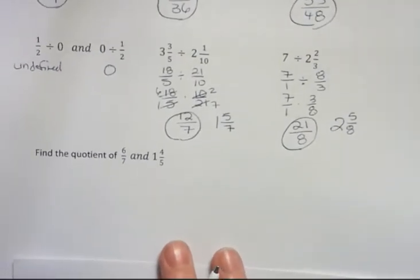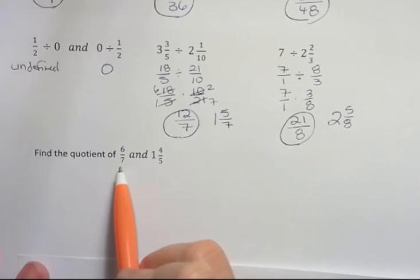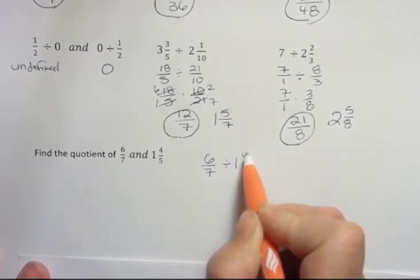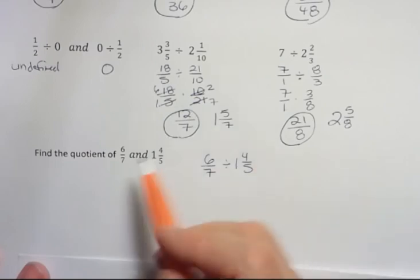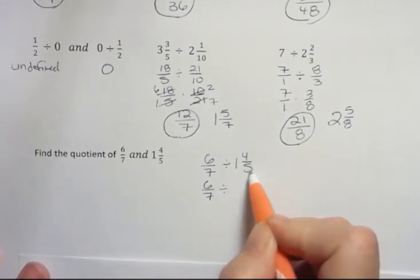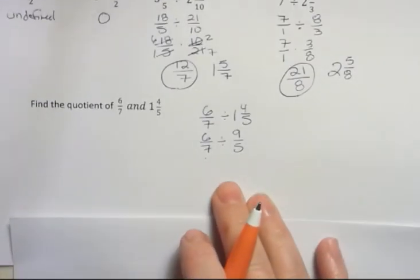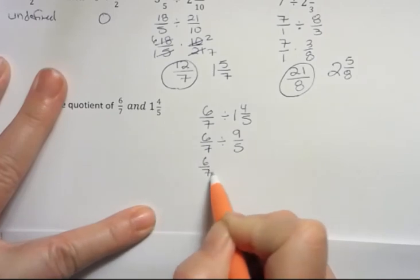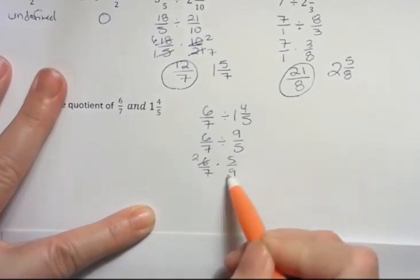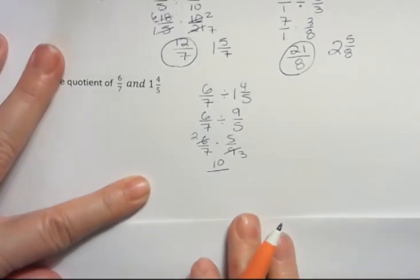Last problem, it could ask you to find the quotient of something. A quotient means to divide. And when you say quotient, whatever you say first has to come first. So it has to be this way: 6 sevenths divided by 1 and 4 fifths. We don't always put the greatest number first. We have to put it in the order that they were stated. 6 sevenths doesn't change. 1 times 5 is 5 plus 4 is 9 fifths. Now I can divide that. I'm going to take the dividend and leave it the same. That is 6 sevenths times 5 over 9. I can simplify here because 3 goes into 6 twice and into 9 three times. And 2 times 5 would be 10, and 7 times 3 would be 21.